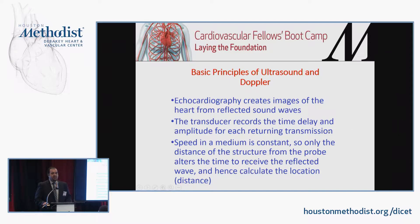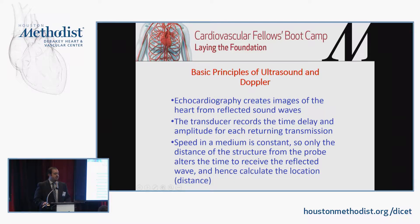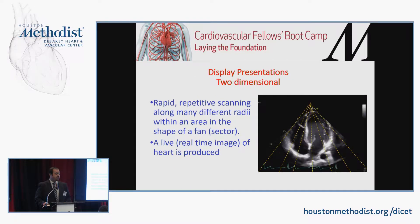The transducer records the time it takes for sound waves to travel down to the tissue of interest and come back. Since we have a fixed speed of sound in tissue — 1.5 meters per second — the only factor we need to account for is the distance based on the time from when the sound was emitted to when it was received. That's how the machine calculates the location of the structure being imaged.